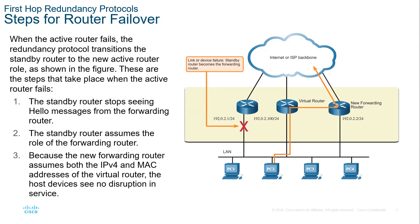Here we have two actual physical routers — one active, one standby. When the active connection is no longer available, the standby router listens. When it can no longer hear the active router's hello messages, it promotes itself to active. That way, the virtual router acting as our default gateway automatically transitions from the first router to the second router.